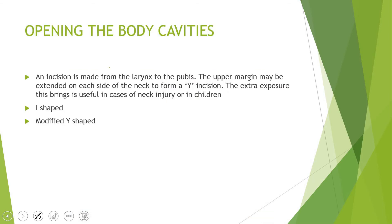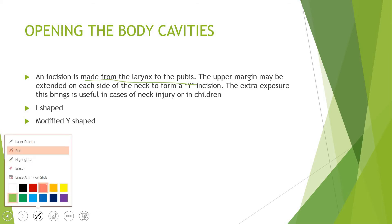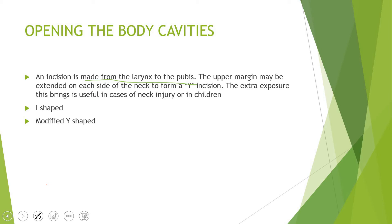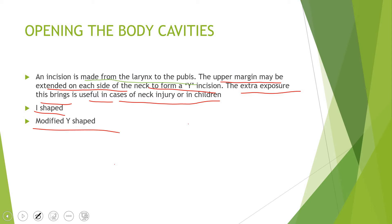To summarize the incision types: an incision from the larynx to the pubis is called an I-incision. Extending the upper margin on each side to the acromion process gives a Y-shaped incision, which provides extra exposure — very useful in cases of neck injury and in children. In a modified Y-shaped incision, we take the incision from the manubrium of the sternum to the mastoid process on each side.